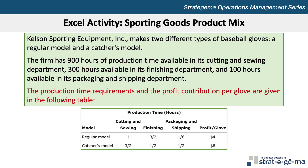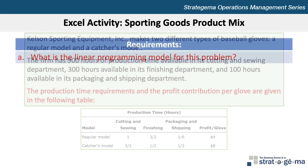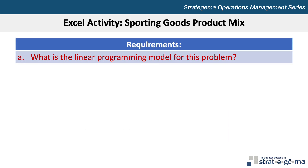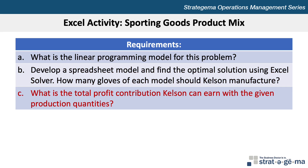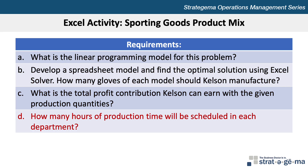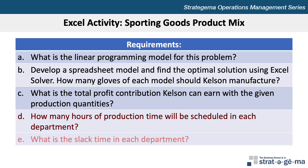The production time requirements and the profit contribution per glove are given in this table. (a) What is the linear programming model for this problem? (b) Develop a spreadsheet model and find the optimal solution using Excel Solver. How many gloves of each model should Kelsil manufacture? (c) What is the total profit contribution? (d) How many hours of production time will be scheduled in each department? And (e) what is the slack time in each department?